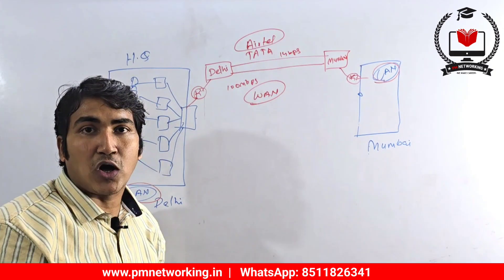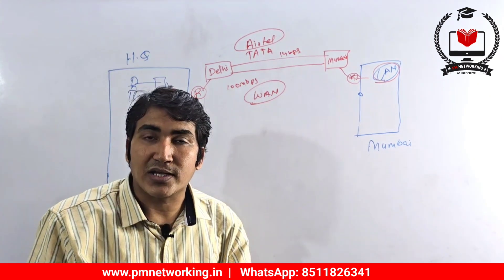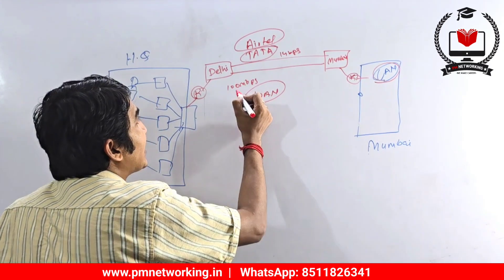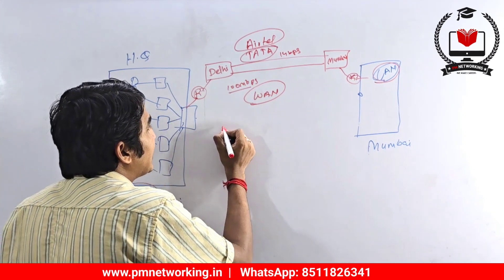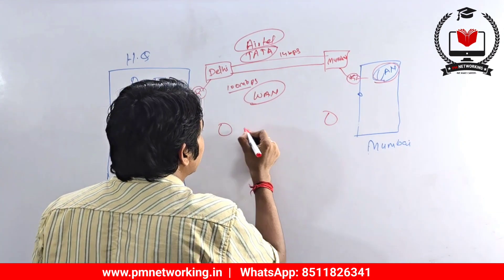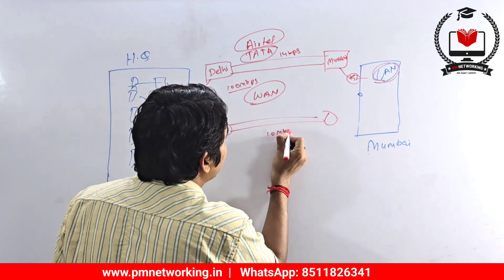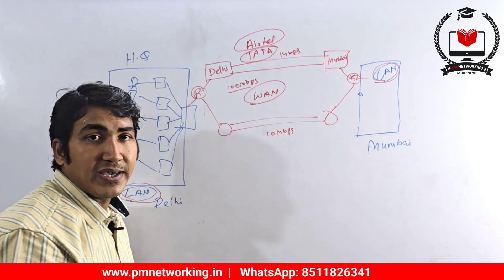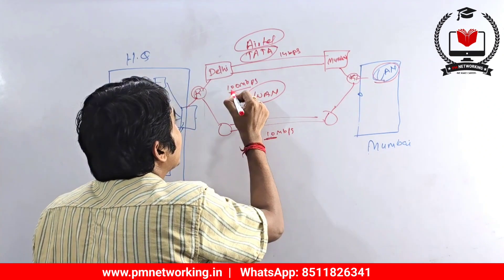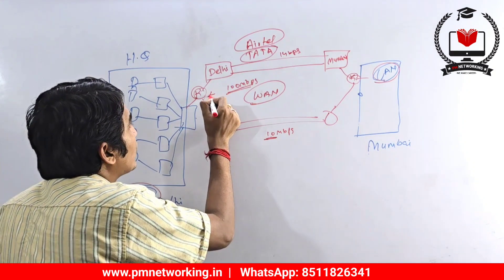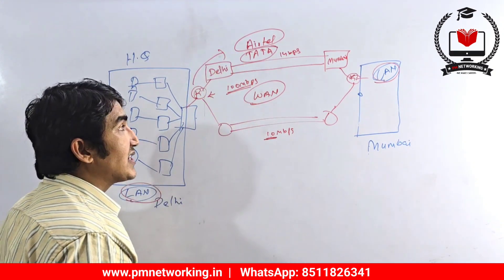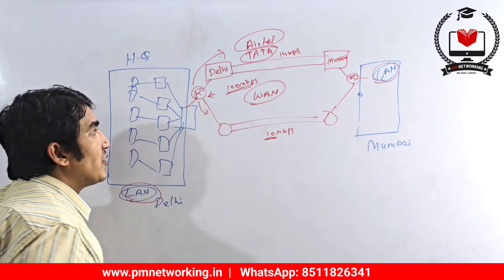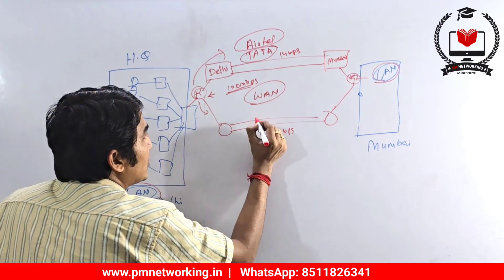If you are thinking this network is not reliable — what if this ISP link goes down — then you have to purchase another connectivity as well for backup. Let's suppose from Tata I am also going to purchase connectivity — let's say 10 Mbps. So now I have two links between Delhi and Mumbai: primary link of 100 Mbps from Airtel and backup link of 10 Mbps from Tata. I can configure the router to forward all traffic toward Airtel; if Airtel goes down, the router will automatically start forwarding traffic toward the backup link.